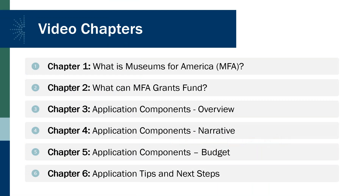This video is organized into six chapters. First is what is Museums for America, which explains the purpose and design of the grant program. Next, what can MFA grants fund, covering types of projects and funding amounts. Then application components and introduction, describing the types of documents needed to create an MFA grant application, followed by the application components narrative section focusing on composing the narrative. Next is a section providing details on the budget, and finally a concluding section with tips and next steps. The complete set of instructions for how to prepare and submit an MFA application are found in the Notice of Funding Opportunity published on Grants.gov and available on the IMLS website.